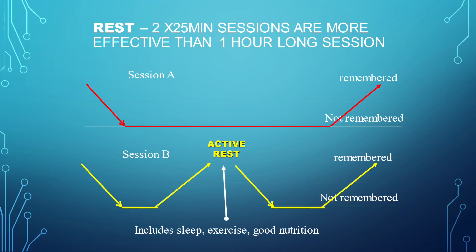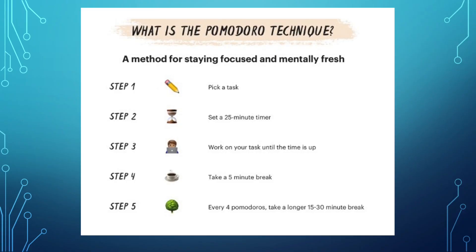One thing that we know is that we can dramatically increase the effectiveness by breaking that one hour slot into two 25-minute sessions, because then you have a higher level beginning recall and a higher level ending recall for the first 25 minutes, followed by a five minute break, and then two higher periods of recall at the beginning and the end of the second session. We call this technique the Pomodoro technique, named after the old fashioned tomato-shaped kitchen timer that we all probably know and remember.